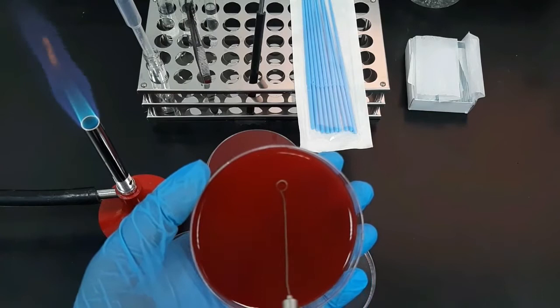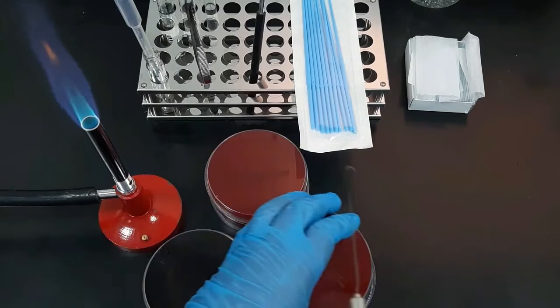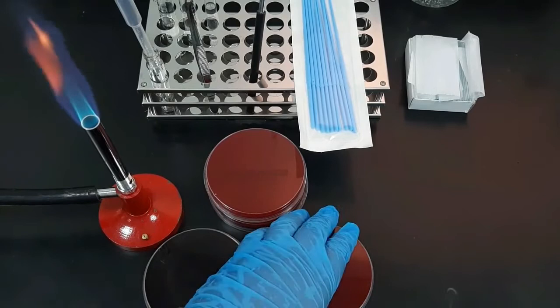Once the wire loop is cooled, make four to five streaks in the third quadrant area by pulling out from quadrant two without overlapping the previous streaks. Close the plate and again heat the loop and repeat the streaking in the fourth quadrant of the plate.